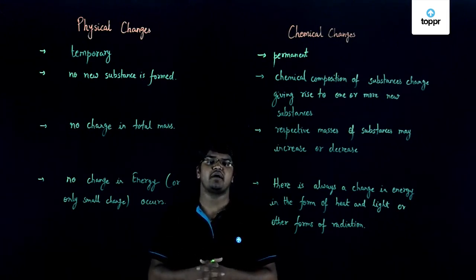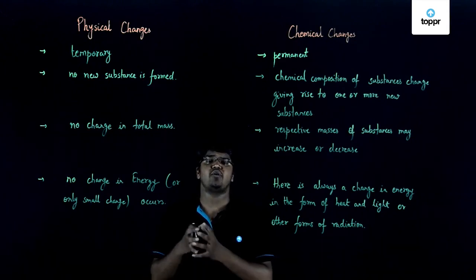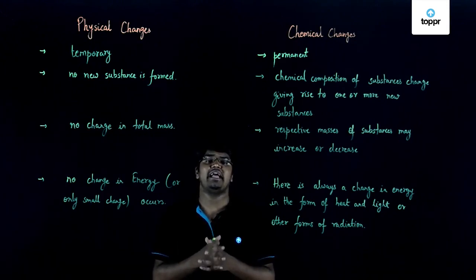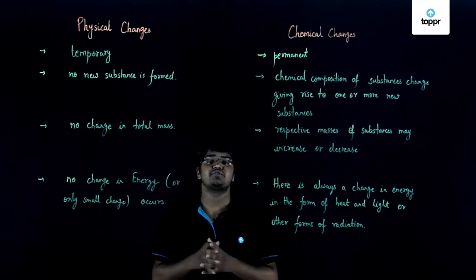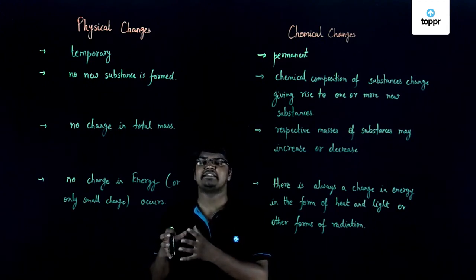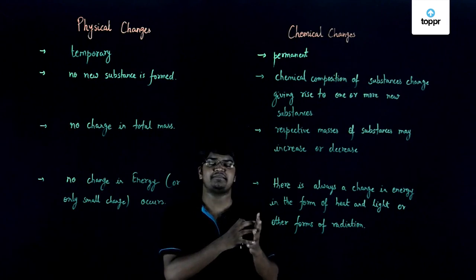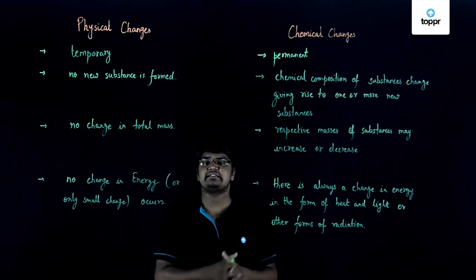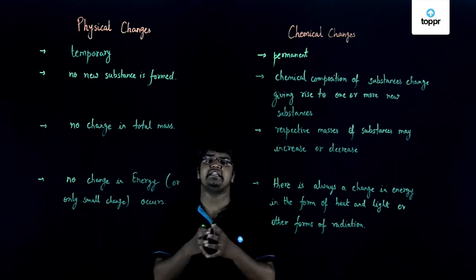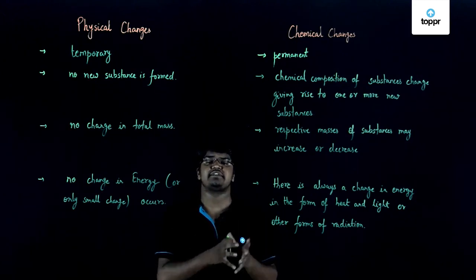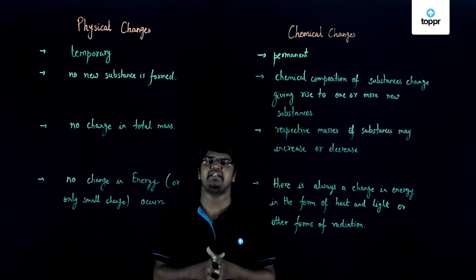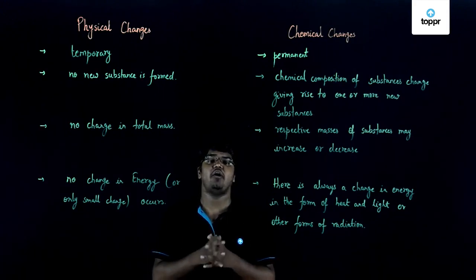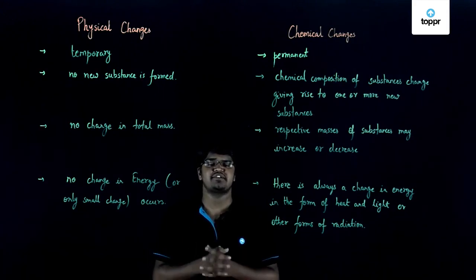For example, copper sulphate when undergoing reaction with zinc will become zinc sulphate plus copper. So copper sulphate has reduced its mass and become zinc sulphate, while zinc has gained mass to become zinc sulphate, but the overall mass of the reaction will remain unchanged by the law of conservation of mass.